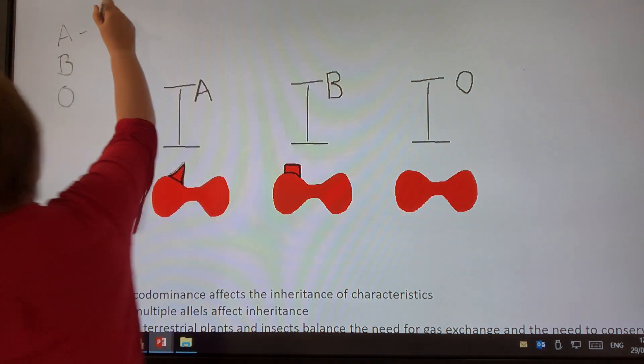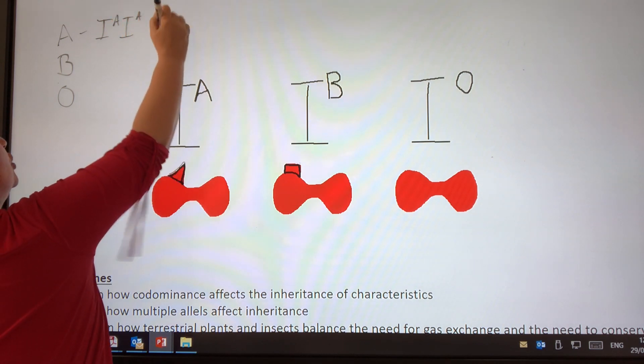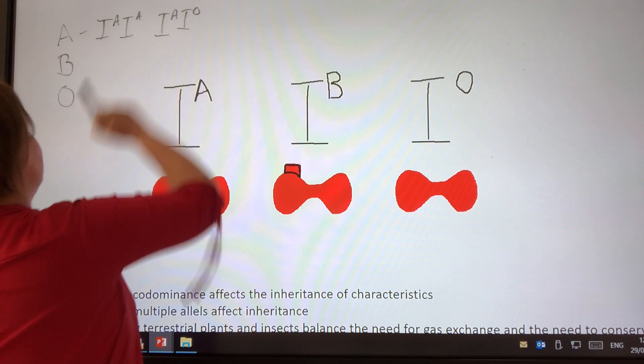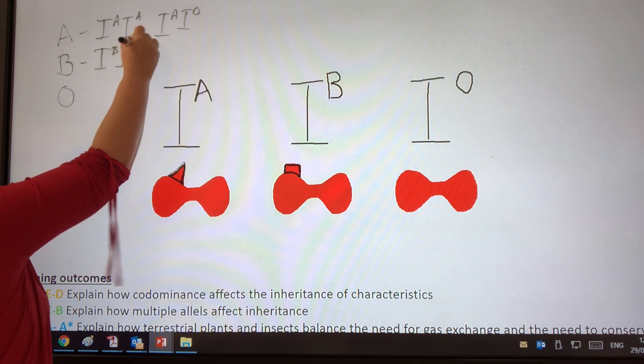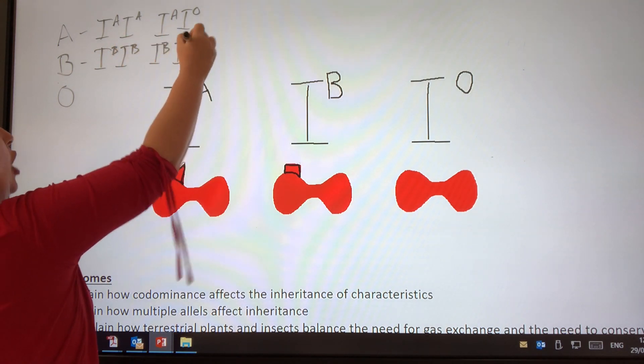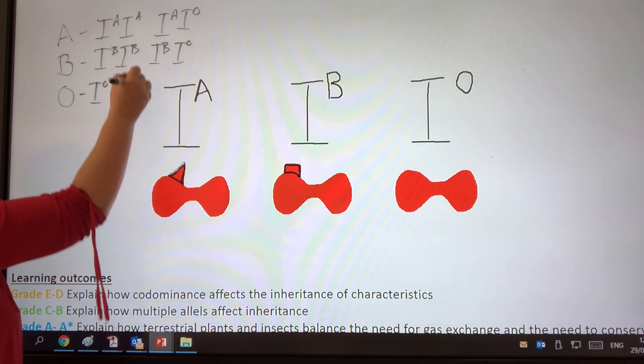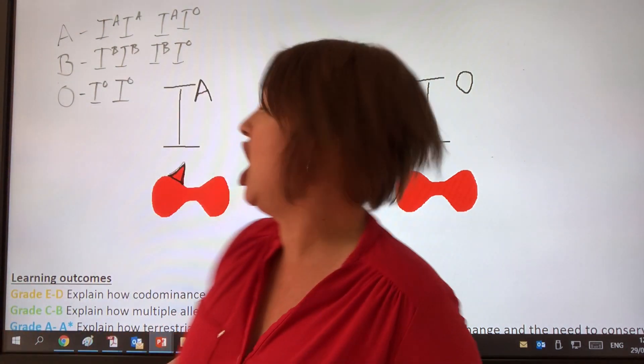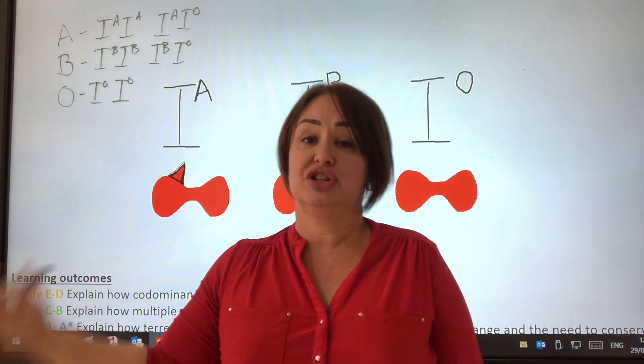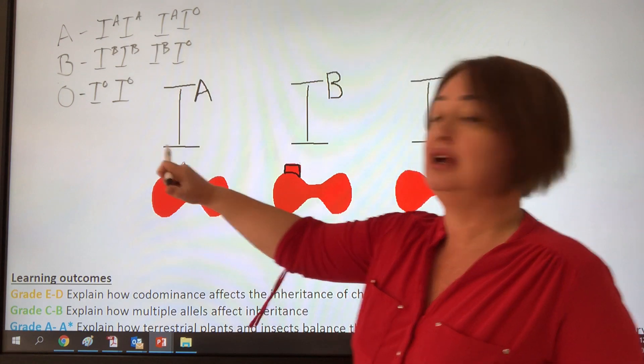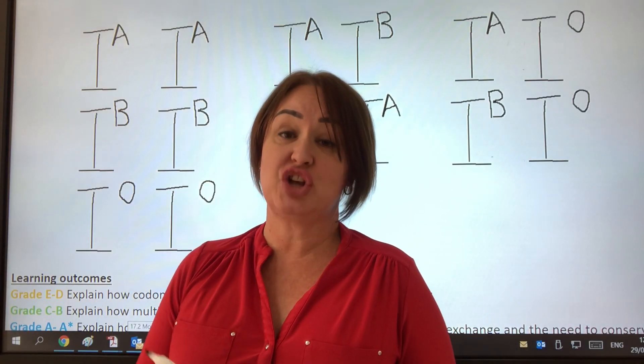If you were blood group A, you could be of genotype IA IA or you could be IA IO. If you're blood group B, you could be IB IB or IB IO. If you're blood group O, you have to be IO and IO. Why? Because if you had A there, it would dominate. If you had B there, it would be dominant to the other. So, equally dominant, recessive to both. It's a bit of an unusual example.